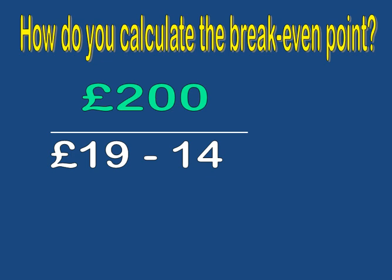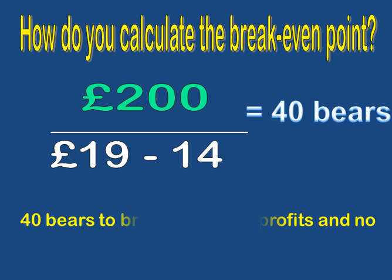We need to put those into the formula. It ends up as 200 divided by 5 — because £19 minus £14 equals £5 — which gives you 40 bears. Remember, it's not just 40; it's 40 bears. What it means is he has to sell 40 bears to breakeven, so he'll make no profits and no losses.